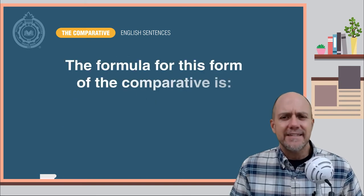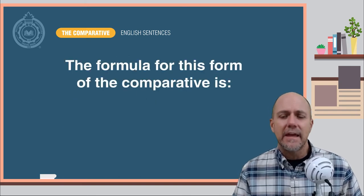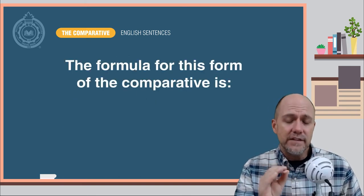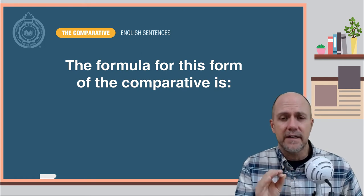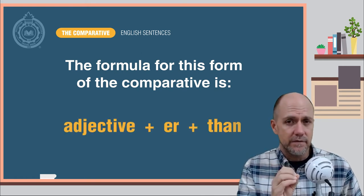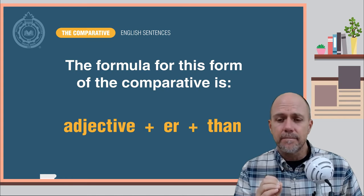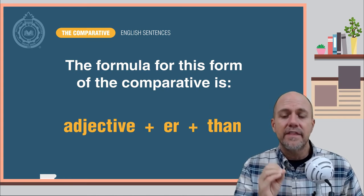So as you can see in the examples, the formula for this form of the comparative in English is the adjective plus -er plus the word than.